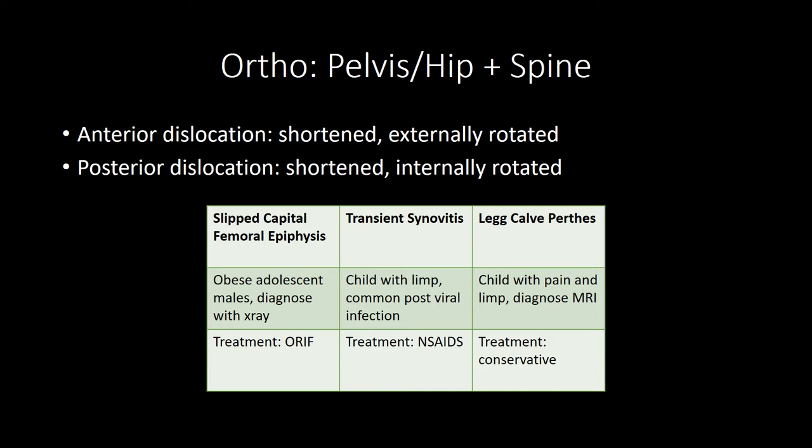In hip dislocations, the leg is usually internally rotated and shortened. The posterior type is most common, often caused by the knee bracing the dashboard in a motor vehicle collision. Always order an MRI to assess for avascular necrosis, and test sciatic nerve function via dorsiflexion on physical exam. For femur fractures, avoid traction in femoral neck fractures; treatment is open reduction and internal fixation. Slipped capital femoral epiphysis (SCFE) is seen in obese adolescent males — diagnose with x-ray and treat with open reduction and internal fixation.